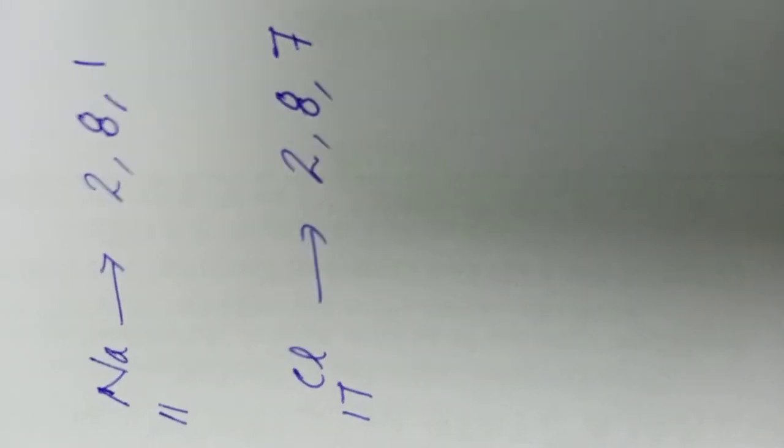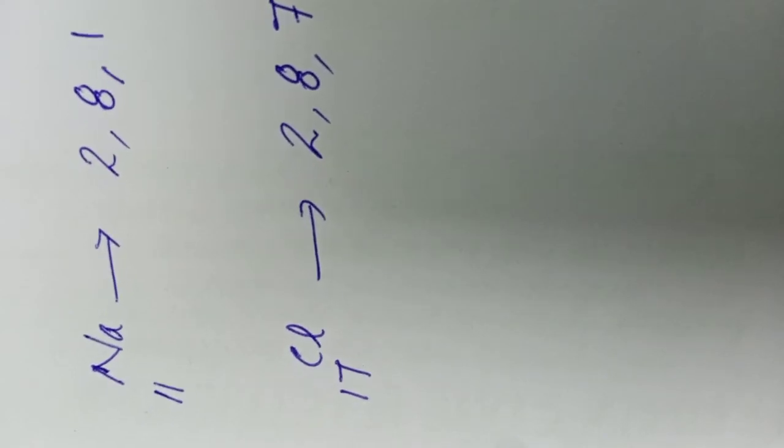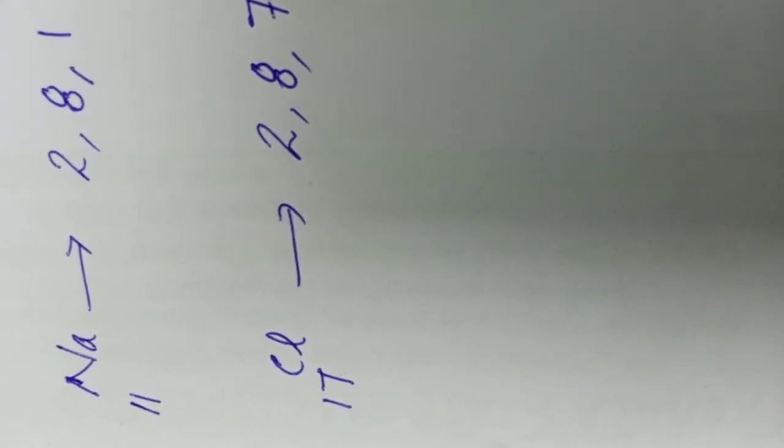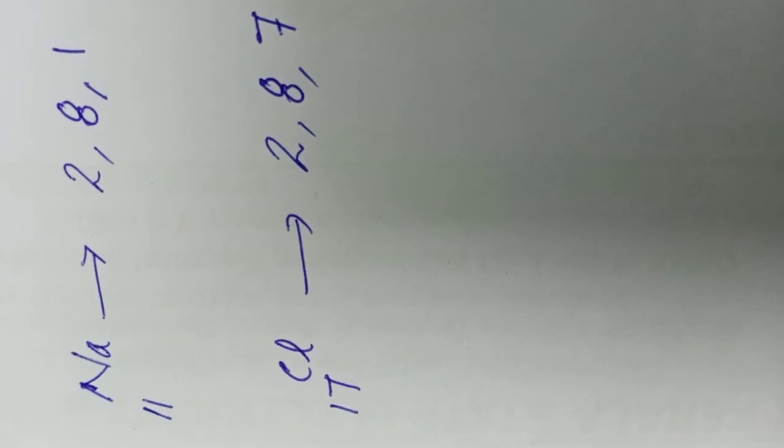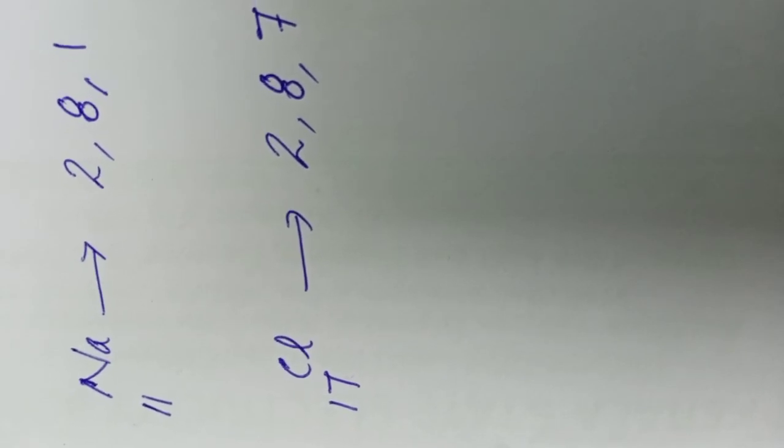Since the electronic configuration of sodium is 2,8,1, sodium atom removes its 1 electron and gets stable octet.